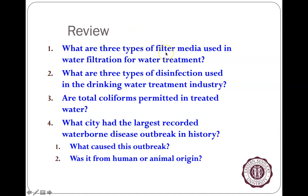For a quick review: what are the three major types of filter media used in water filtration at water plants? The answers are anthracite or coal grains, sand and gravel, and garnet. Diatomaceous earth, made from diatoms, is another that has been used at different times. That's enough on filtration.